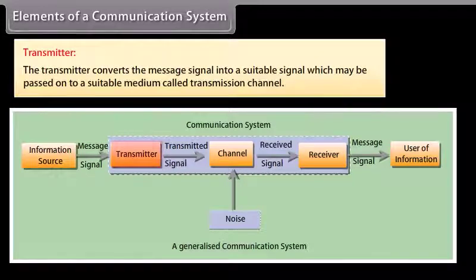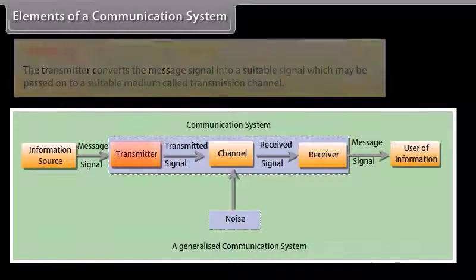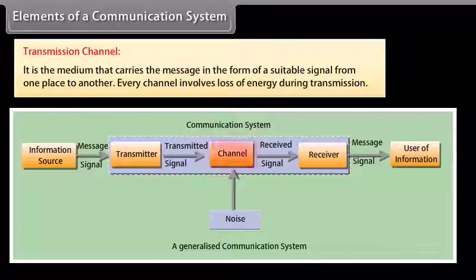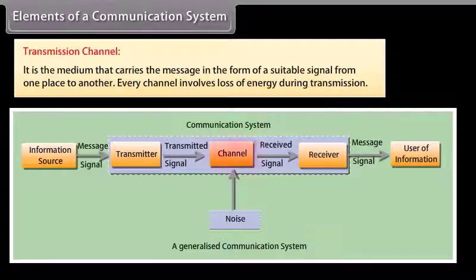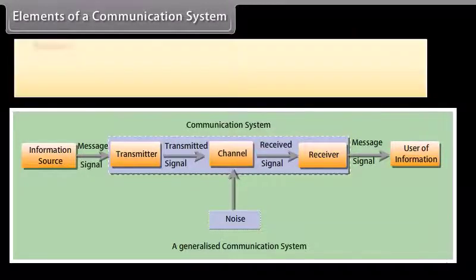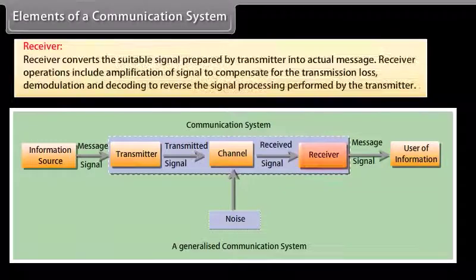The transmitter converts the message signal into a suitable signal which may be passed on to a suitable medium called the transmission channel. The transmission channel is the medium that carries the message in the form of a suitable signal from one place to another.